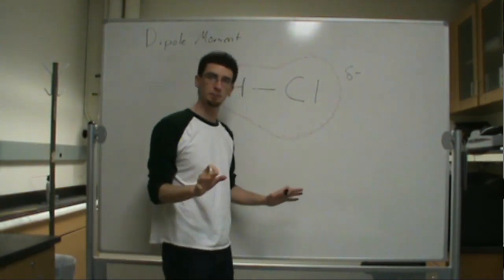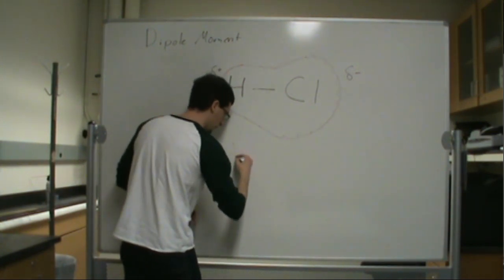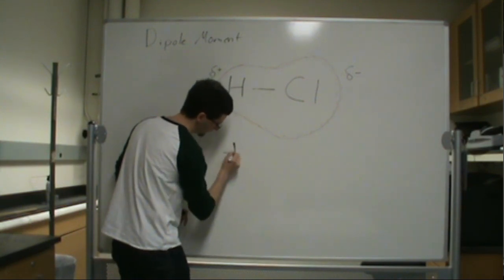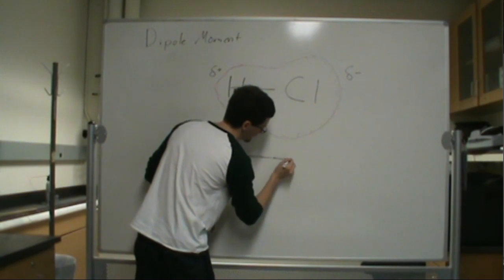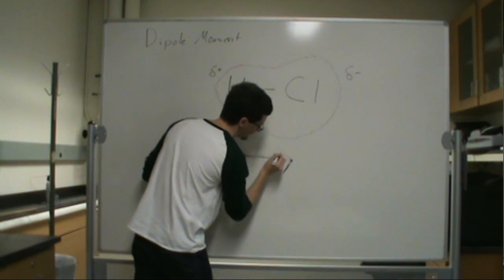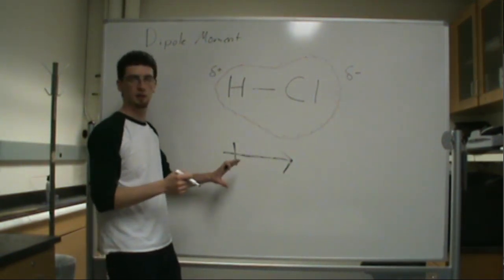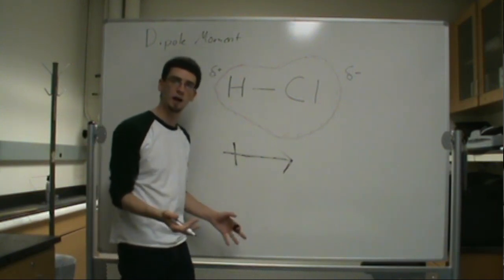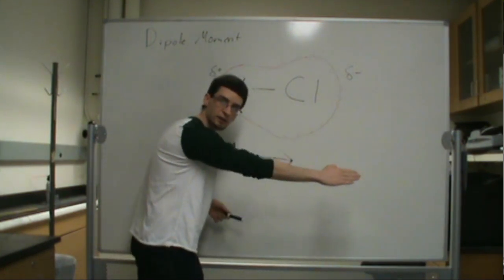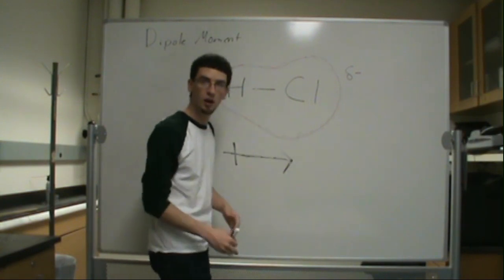Now, if we were to write out the dipole moment, the dipole moment would point something like this, where we have the tail end, like this. Now, a dipole moment has a direction to it. It is a vector quantity. So, what I mean by that is, it has a force and it has a direction. So, a magnitude and a direction. In this case, it's pointing towards the chlorine.